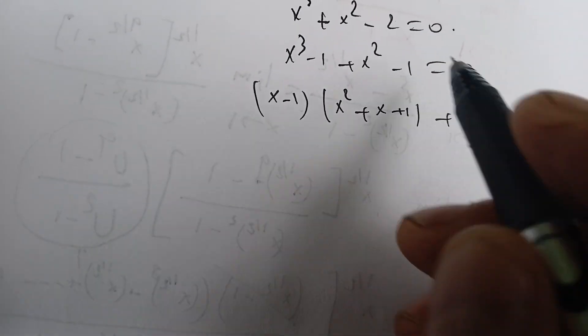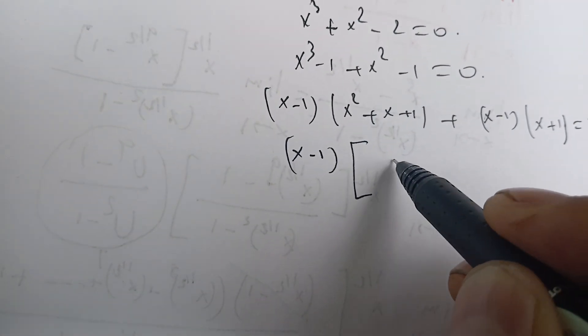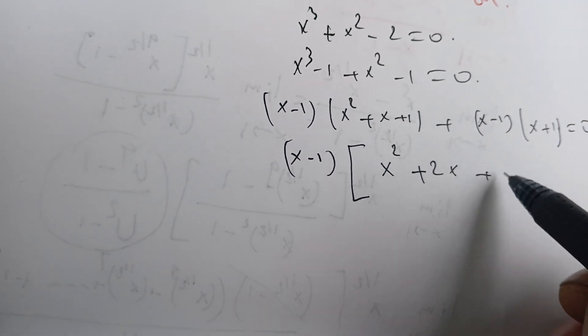Now we move x minus 1 to the front and we factor everything. We get x squared plus 2x plus 2.